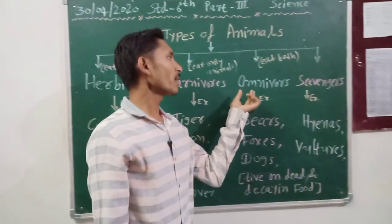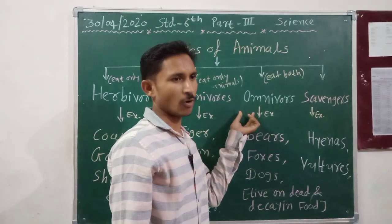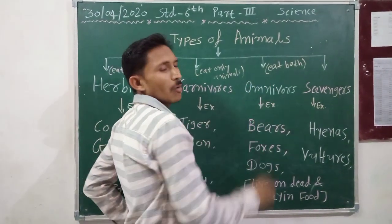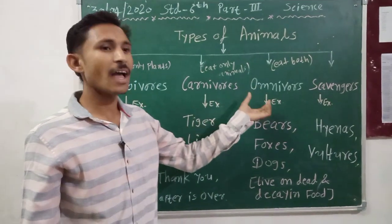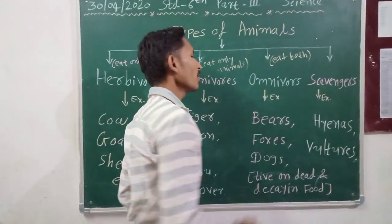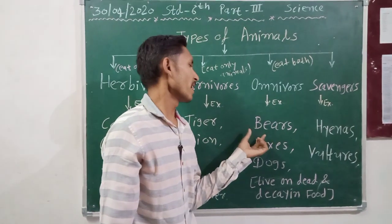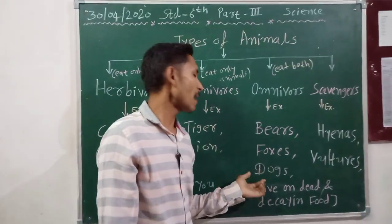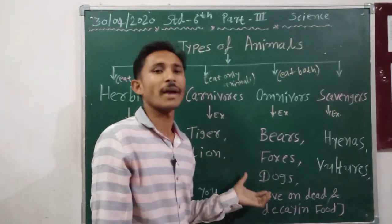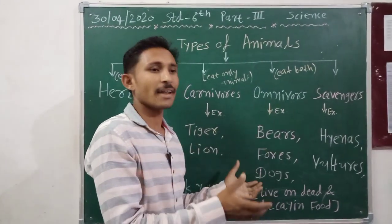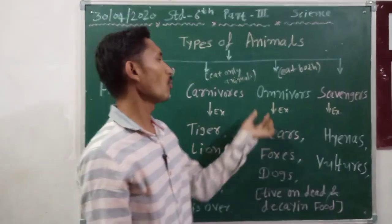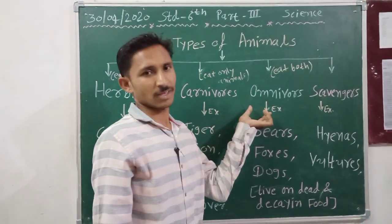Third type of animal: omnivores. Omnivores means animals which eat both plants and animals. For example, bears, fox, dogs. These animals eat both plants and other animals, so they are called omnivores.